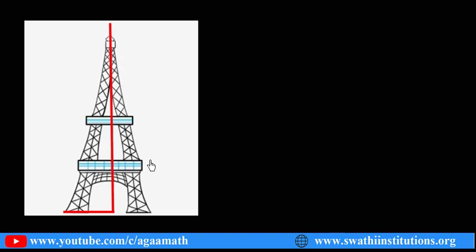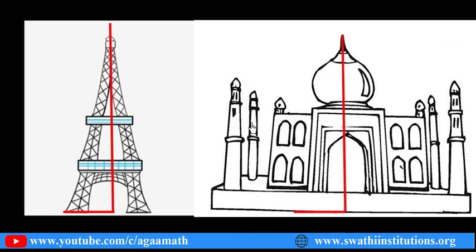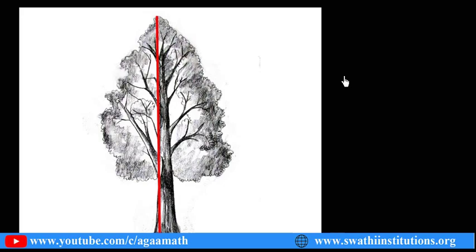Here we observe a tower. The height of the tower means from the top of the tower a point is taken, and from that point we draw a vertical line — always perpendicular to the ground. Similarly for the Taj Mahal: from the top I draw a vertical line perpendicular to the ground. That vertical line is considered the height of the figure.